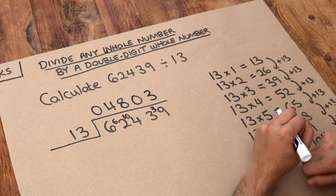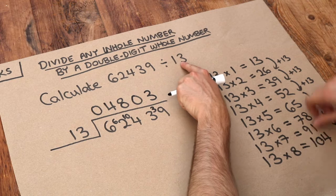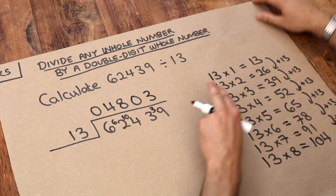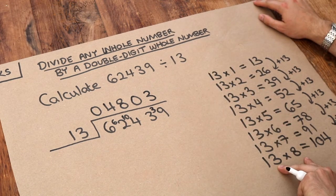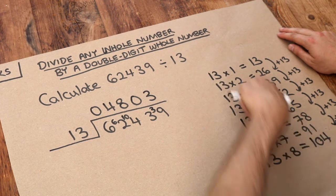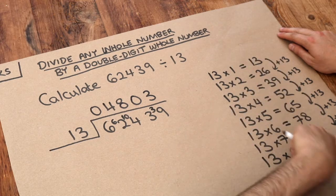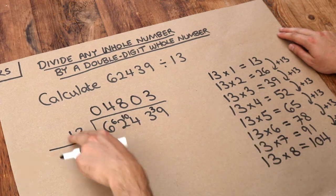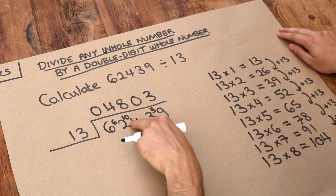So just to recap the method. If you're dividing by a double digit number, I recommend writing out the times table for that number on the right. Potentially going up to 9 times whatever that number is. And then that allows us to effectively see how many times that number, say 13, goes into each of these things here.